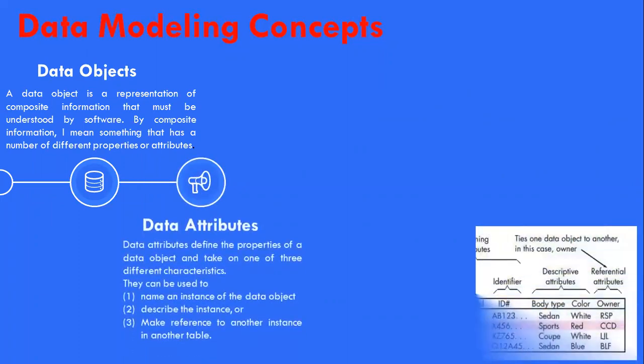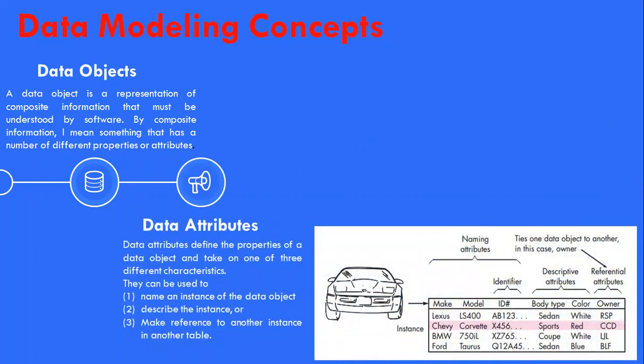Data attributes define the properties of the data object and take on one of three different characteristics: they can be used to name an instance of the data object, to describe the instance, or to make reference to another instance in another table. In addition, one or more attributes must be defined as an identifier — the identifier attribute becomes a key when we want to find an instance of the data object. In some cases, values for identifiers are unique, although this is not a requirement.